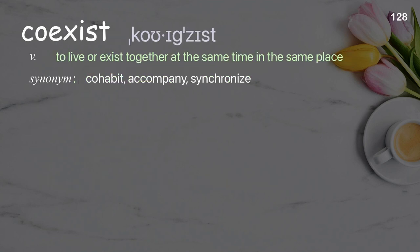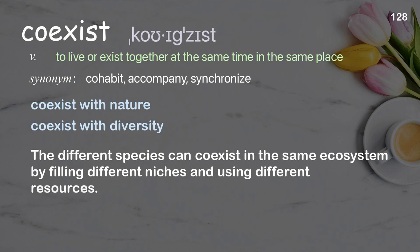Coexist: To live or exist together at the same time in the same place. Examples: Coexist with nature. Coexist with diversity. The different species can coexist in the same ecosystem by filling different niches and using different resources.